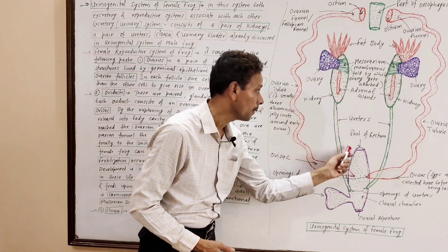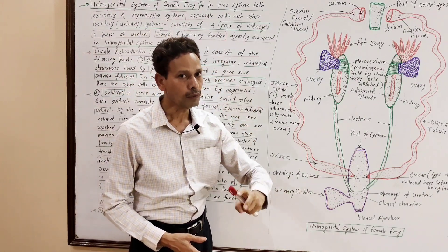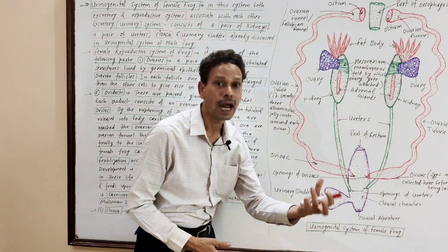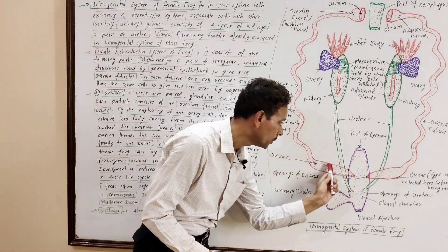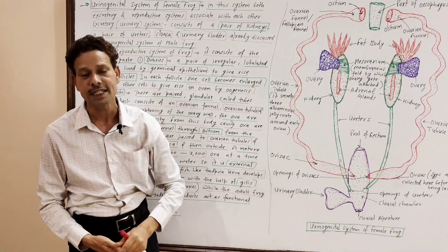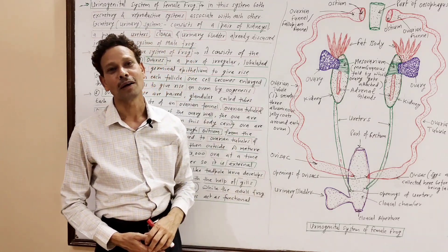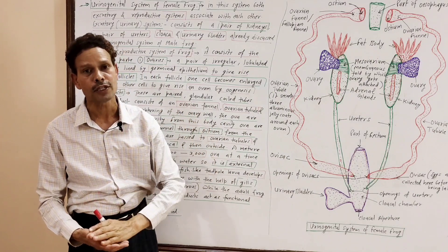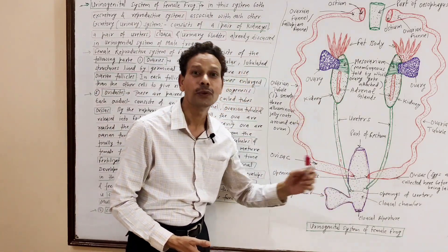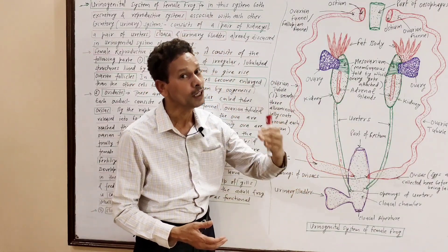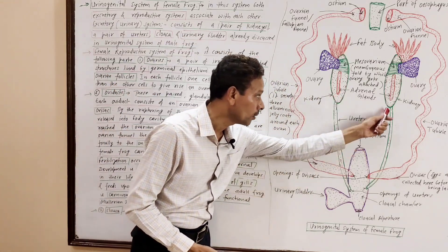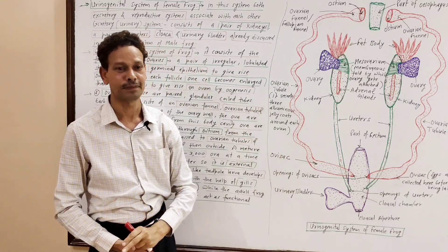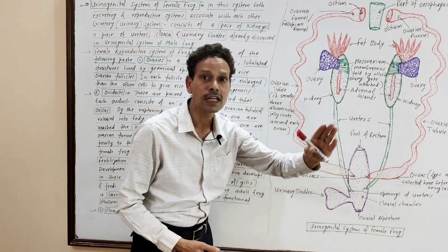The excretory system also includes a pair of ureters. In the case of male frog, the terminal part of each ureter becomes swollen and enlarged — that part is named the seminal vesicle, which stores spermatozoa. But in the case of female frog, these ureters are simple, fine tubular structures, simple ducts which carry urine only. In male frog, the ureters are urinogenital ducts carrying both urine and male discharge, whereas in female frog these carry urine only.